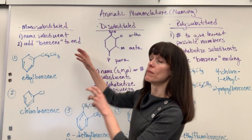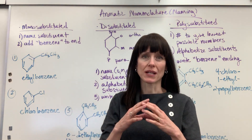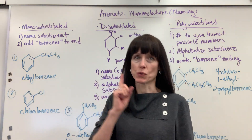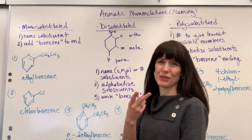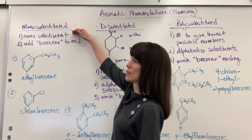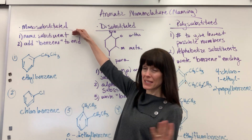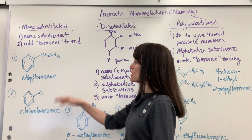We're going to begin with monosubstituted. So we have a benzene ring and we're going to add just one substituent to that. Two easy steps. First, you just name the substituent and the ending of the compound is benzene.